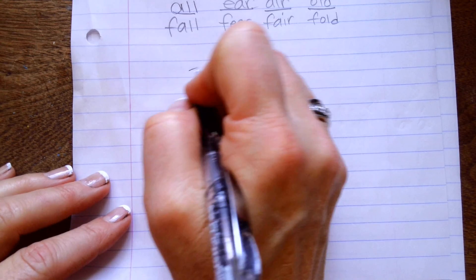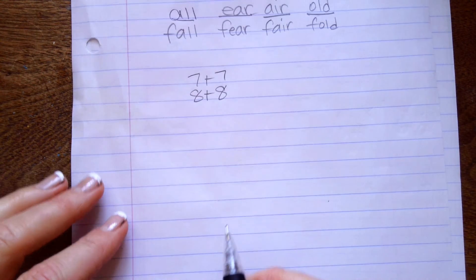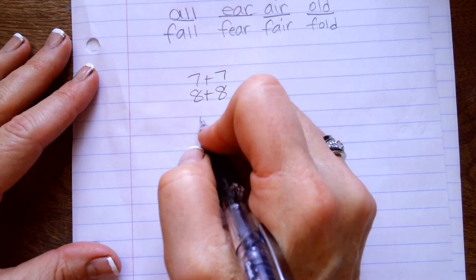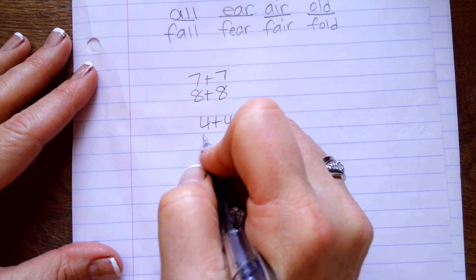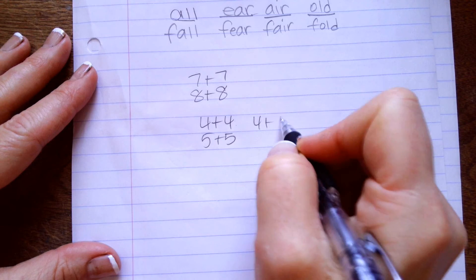So these ones were a little tricky for you. 7 plus 7 is 14. 8 plus 8 is 16. And then I'm just going to go over some of the near doubles. 4 plus 4 is 8. So 4 plus 5 is 9.